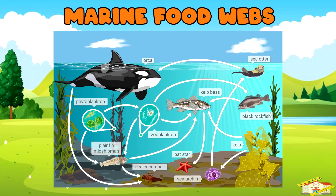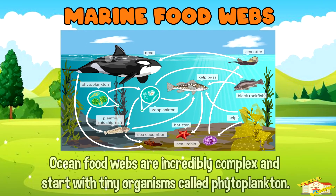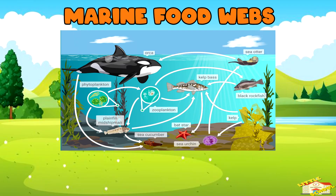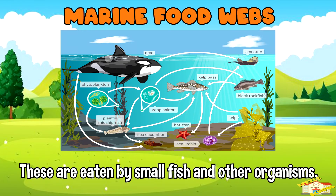Marine food webs. Ocean food webs are incredibly complex and start with tiny organisms called phytoplankton. These are eaten by small fish and other organisms, which are then eaten by bigger fish, seals, and whales.